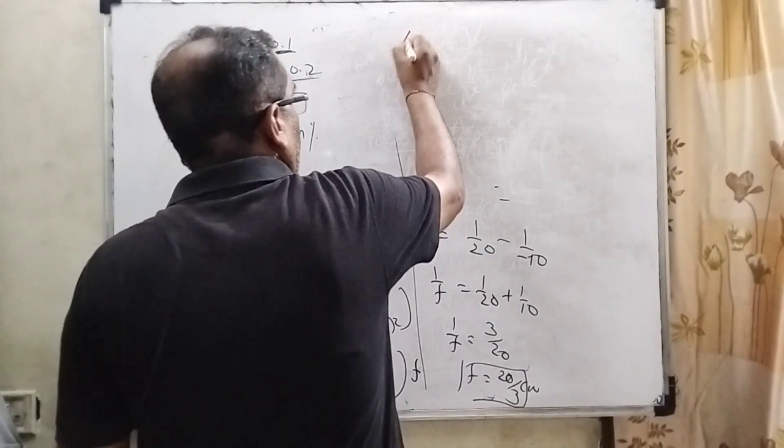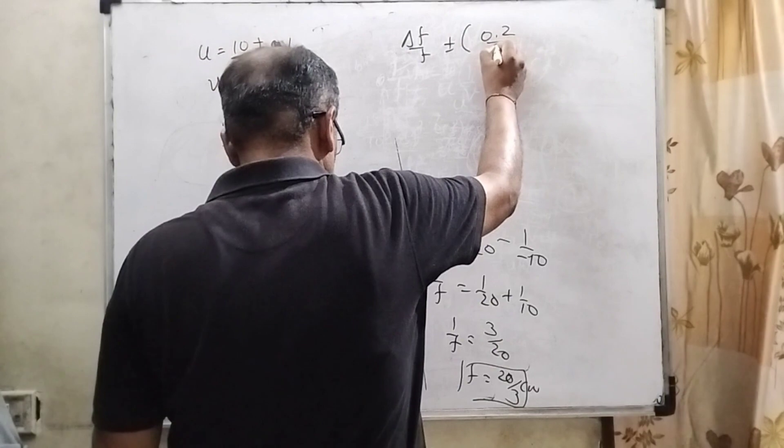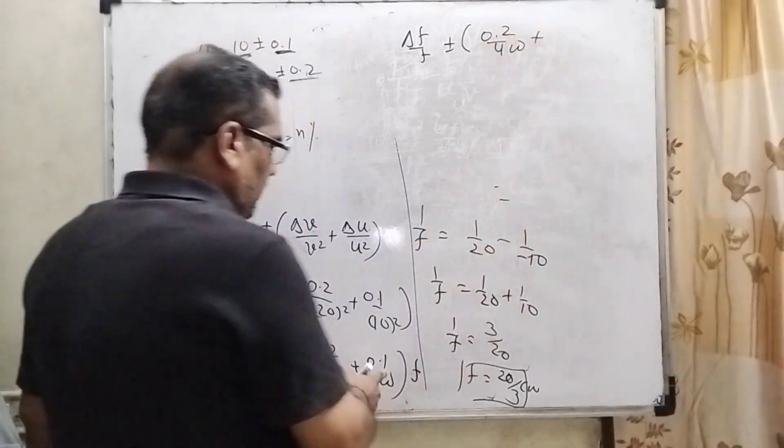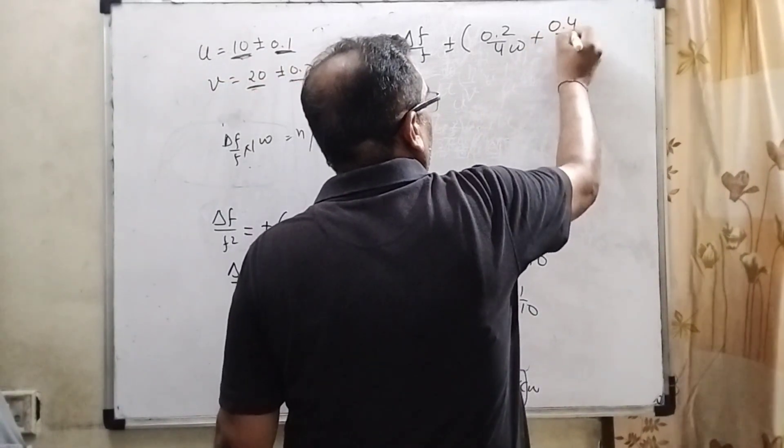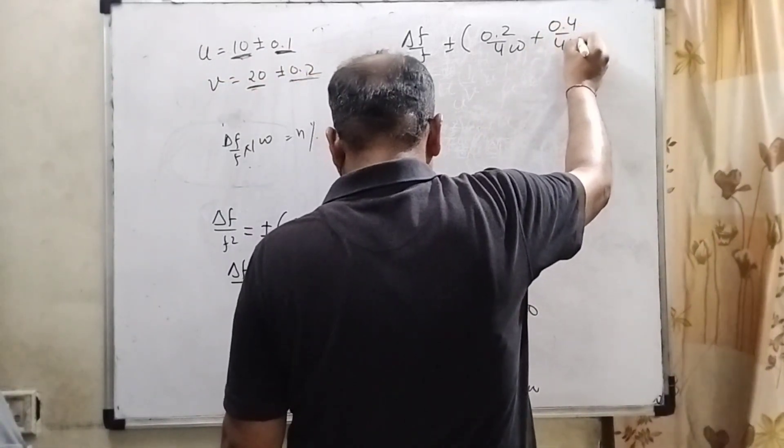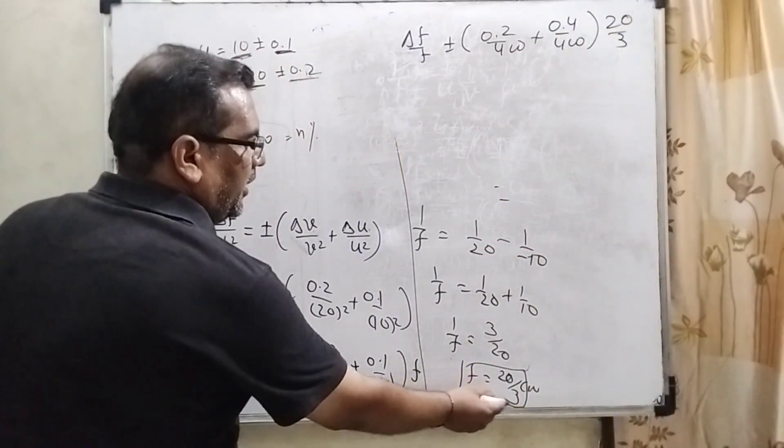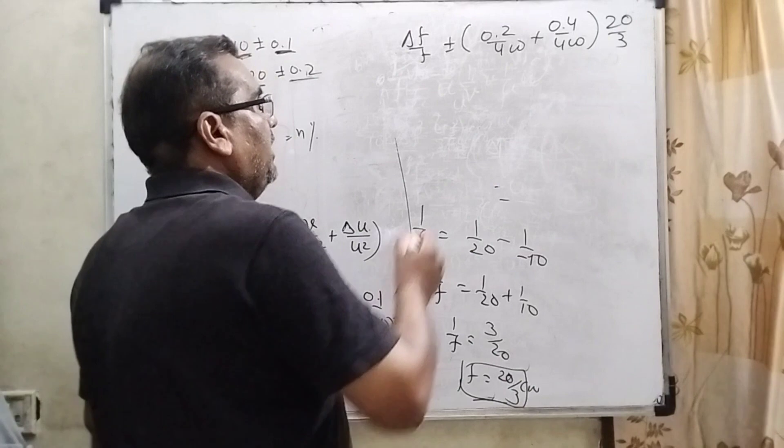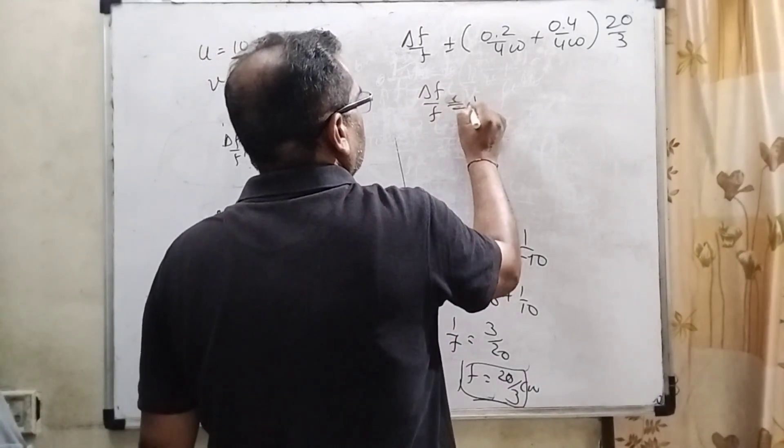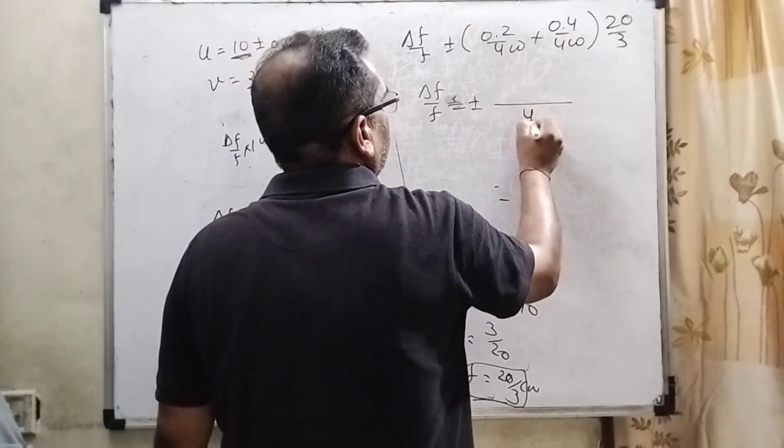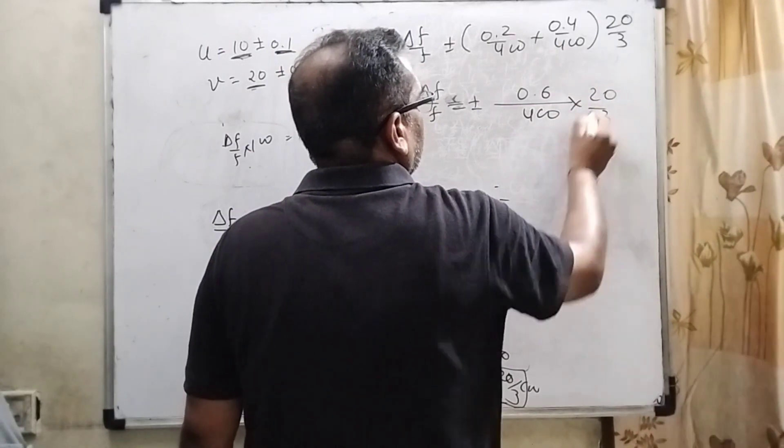Δf/f = ±[0.2/400]. Multiplying 4 in numerator and denominator gives 0.4/400. The value of f we already found is 20/3.